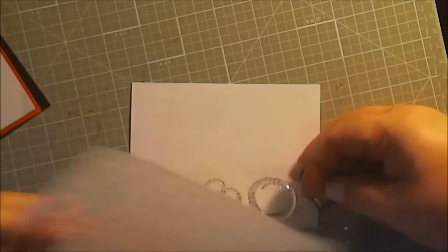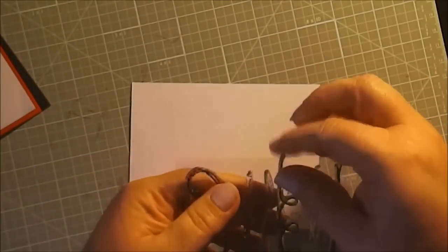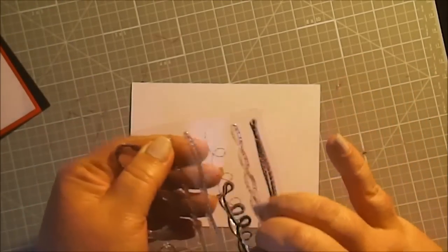With the Stitched Together, we're going to use this curlicue looking stitch here, and I'm going to put it on a block.